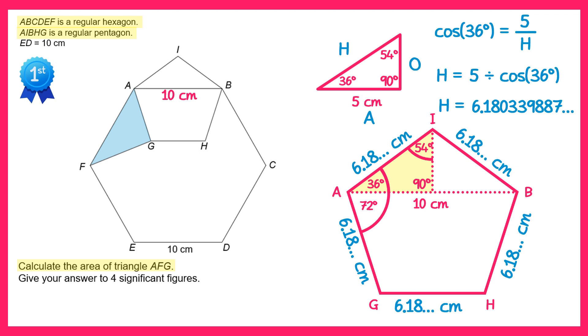Now let's mark on some of this information onto the diagram. Importantly, this 72 degrees here and the length of that line AG, 6.18 centimeters here.